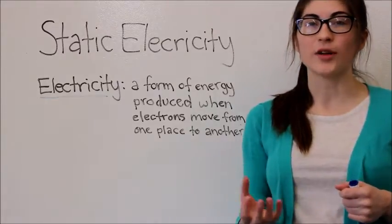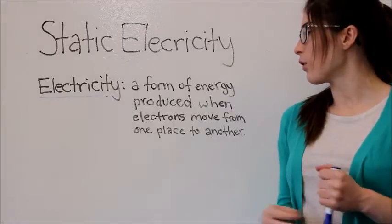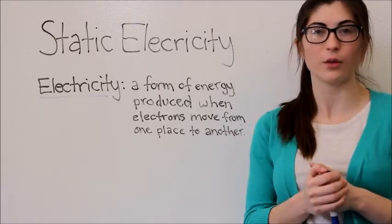So an electron, if you'll remember, has a negative charge. So when electrons move around, that means certain things are going to be charged in different ways.